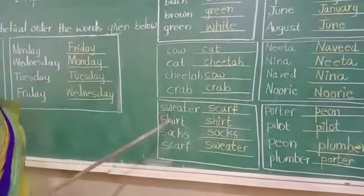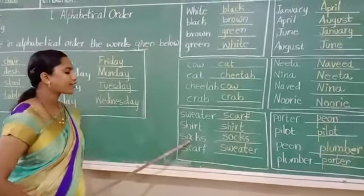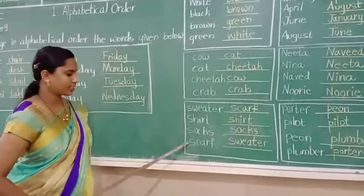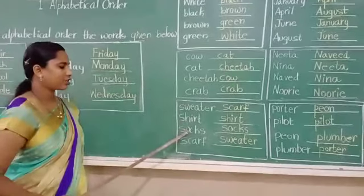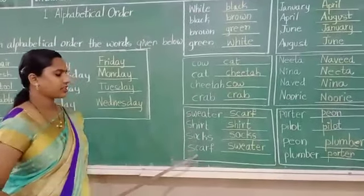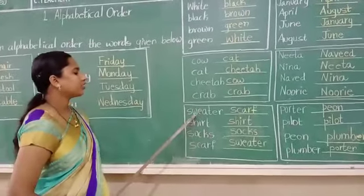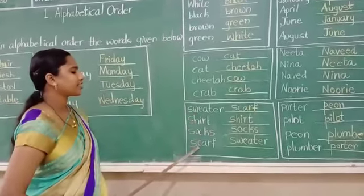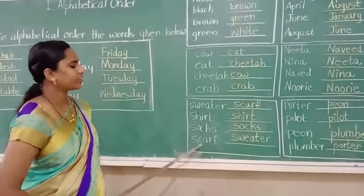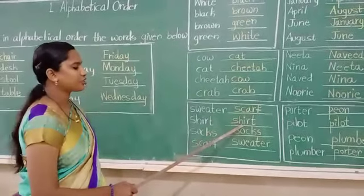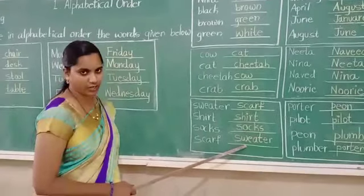Next one: sweater, shirt, socks, scarf. Here also the first letter is same. You should see the second letter — that is W, H, O and C. What are these children? These are clothes. So first one — W, H, O and C — which one we should write first? C. That is scarf. Then shirt. Next, socks. Next one is sweater.